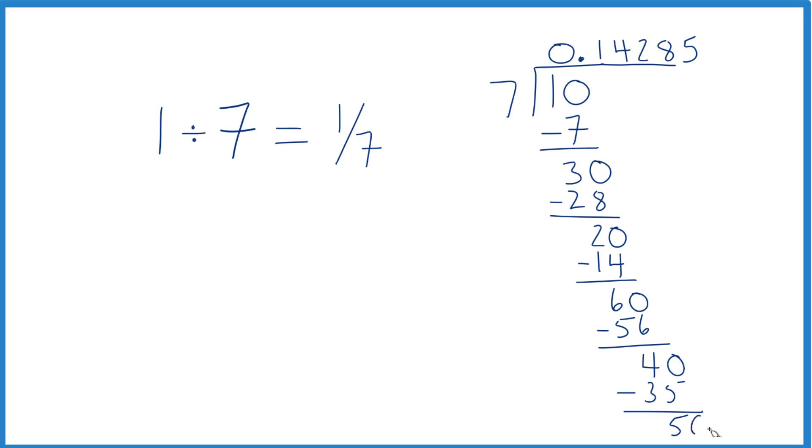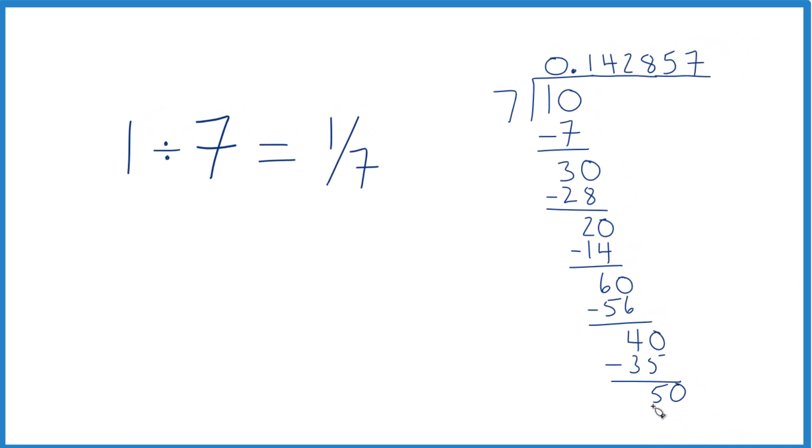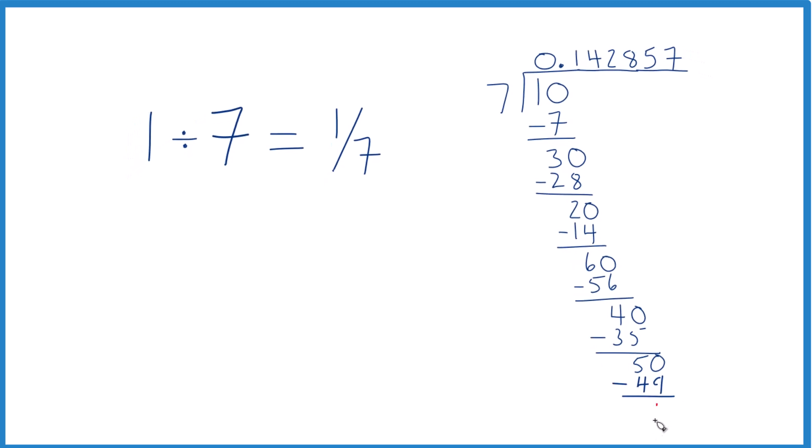And we're going to call it 50. 7 times 7, we need to move this over here a little more. 7 times 7 is 49. And I need to shrink this down now. So we get 49 and we subtract, we get 1. And actually at this point we call it 10.